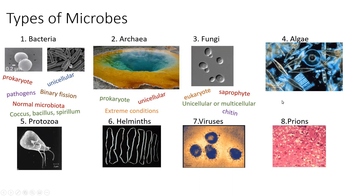The fourth type of microbe is algae. Algae is also eukaryotic. Some are unicellular and some are multicellular. Their cell wall is made up of cellulose.